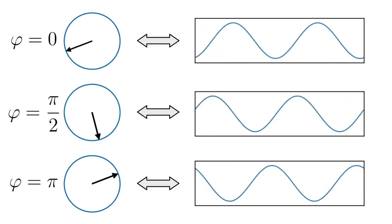Now you may be wondering why we go through all this fuss of using imaginary numbers. Simply put, because it's elegant and easy to work with. It turns out that we can write a Fourier transform without using any complex numbers — and as far as I understood, that's how Fourier initially wrote it down. However, it was quite cumbersome to work with, because it required two separate transformations to reconstruct the signal. And as Albert Einstein once said, everything should be made as simple as possible, but not simpler.